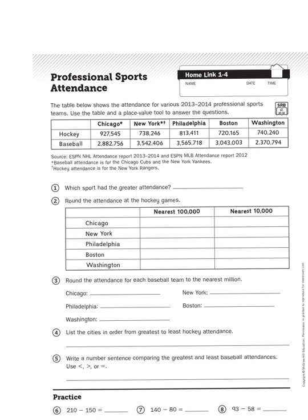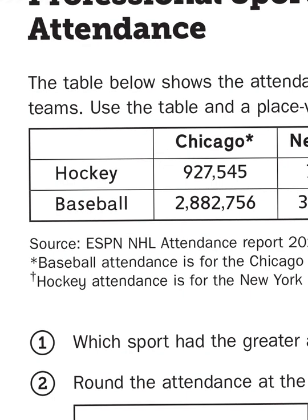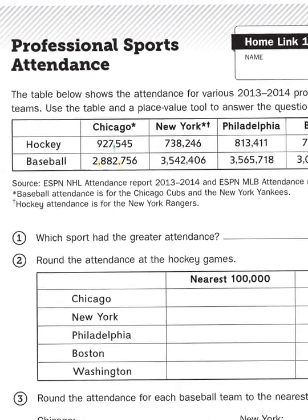Let's take a look at the first question: which sport had the greater attendance? We have to think about which set of numbers is bigger. Looking at Chicago — the Chicago Blackhawks are the NHL team, and for baseball they actually have two teams, the Cubs and the White Sox. So it's no surprise that baseball has the larger attendance. Baseball is in the millions — I know because it has two commas separating seven digits, whereas the hockey number only has one comma separating six digits. So baseball would be the sport with greater attendance.